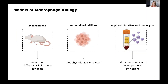The models we've been using to study human macrophage biology — and immunology in general — have really relied on animal models, immortalized cell lines, and peripheral blood. Though they've all been extremely useful for what we now understand of immunology, they do have their own limitations: animal models have fundamental differences in immune function, immortalized cell lines are not physiologically relevant, and although peripheral blood isolated monocytes are useful for studying the recruitment aspect, they still have limitations regarding lifespan, source, and modeling the preceding tissue residency.